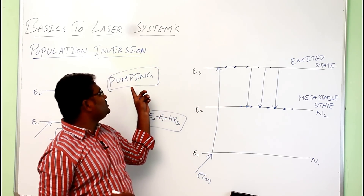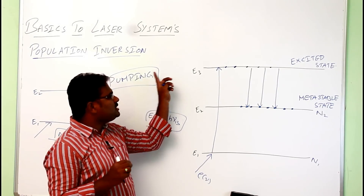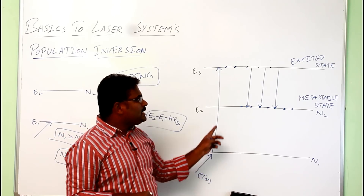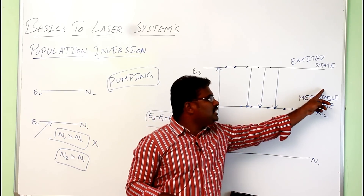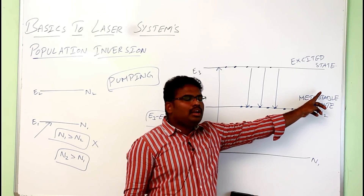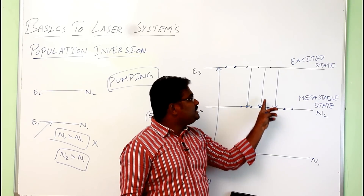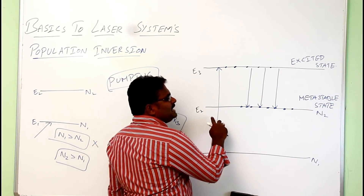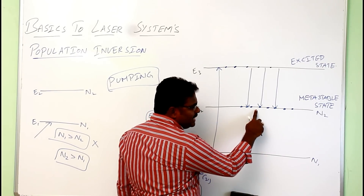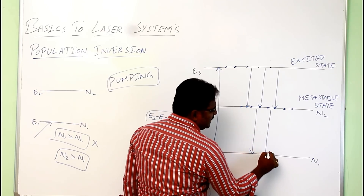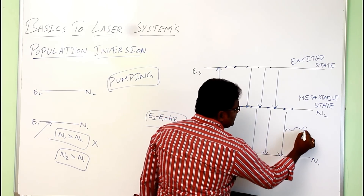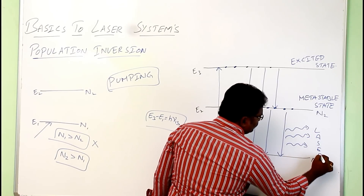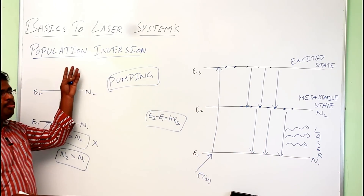To achieve population inversion, two conditions are required: first, pumping — sending atoms from the ground state to the excited state by supplying sufficient energy; and second, the material must contain a metastable state where atoms spend more time. After achieving population inversion, energy can be supplied to atoms in the excited state, and as they come down to the ground state, laser light is produced. This concept is known as population inversion.